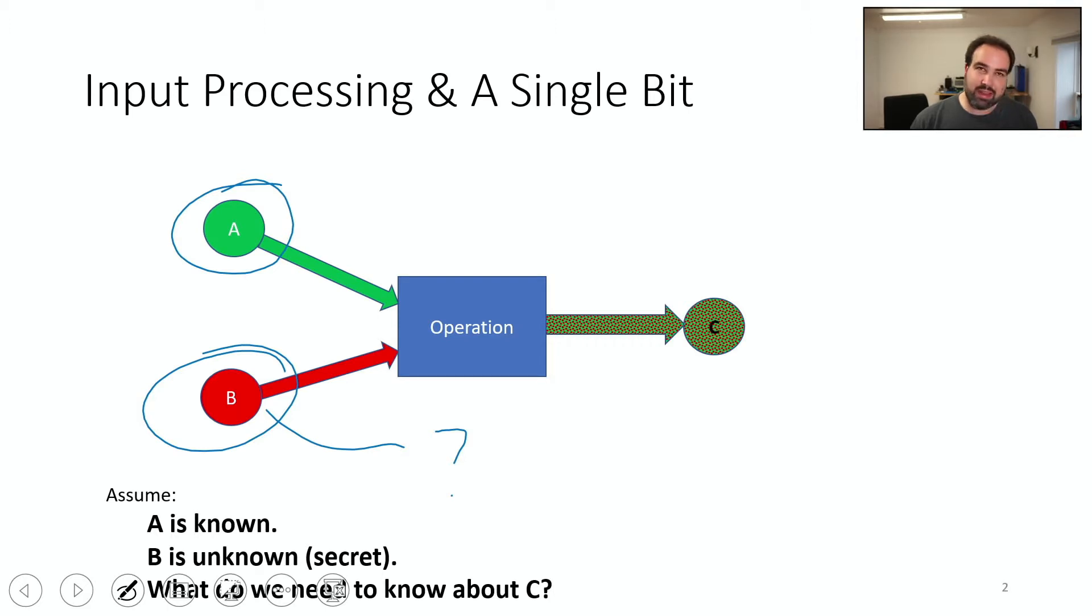If we wanted to figure out what data B is, because we know A, we know what that is. What do we need to know about C? So let's assume here if we fully knew C, we could figure out what B is pretty quickly through either some small search as a small enough search space or some other sort of information.